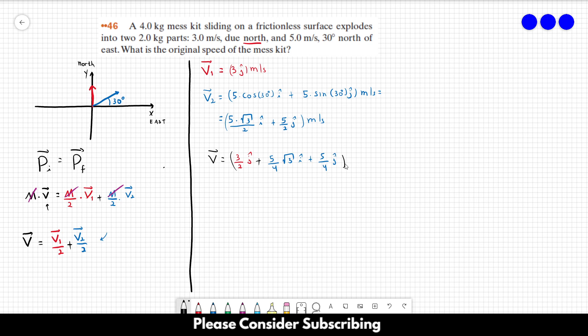So now all we have to do is to find the absolute value of this vector, which is equal to the square root of each component squared.